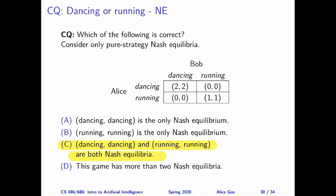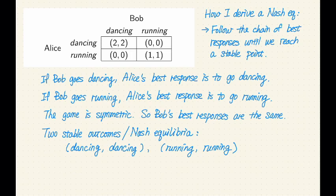So I'm going to talk about the general approaches we can use to derive pure strategy Nash equilibria of any normal form game. One approach I like to follow is that we can use the best responses and follow a chain of best responses until we reach a stable point, a stable outcome of the game.